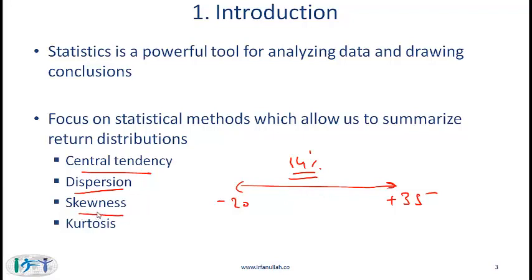Skewness talks about whether the data is skewed to the right, skewed to the left, or whether it is normal, which means there is no skewness on either side. Kurtosis is a slightly more difficult concept that we will talk about towards the end of this reading.